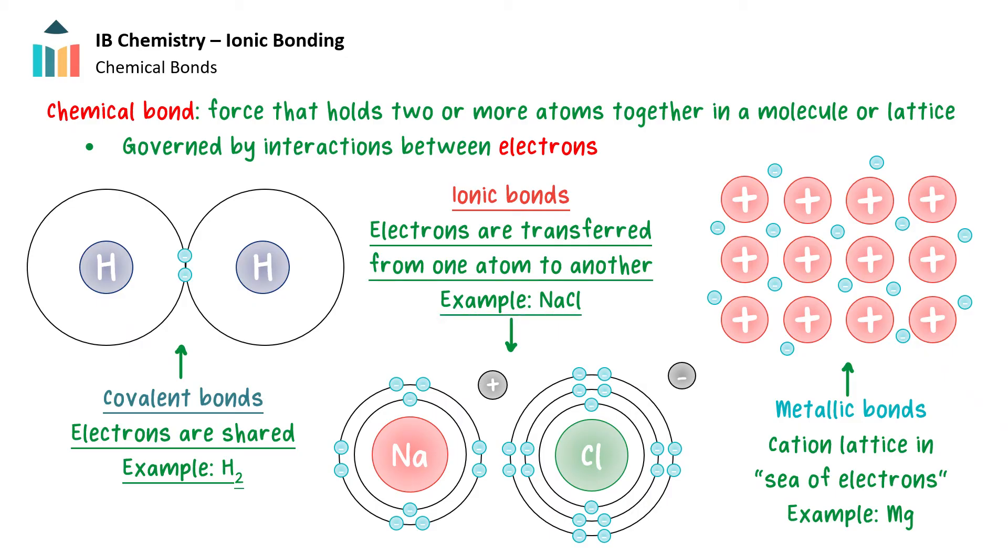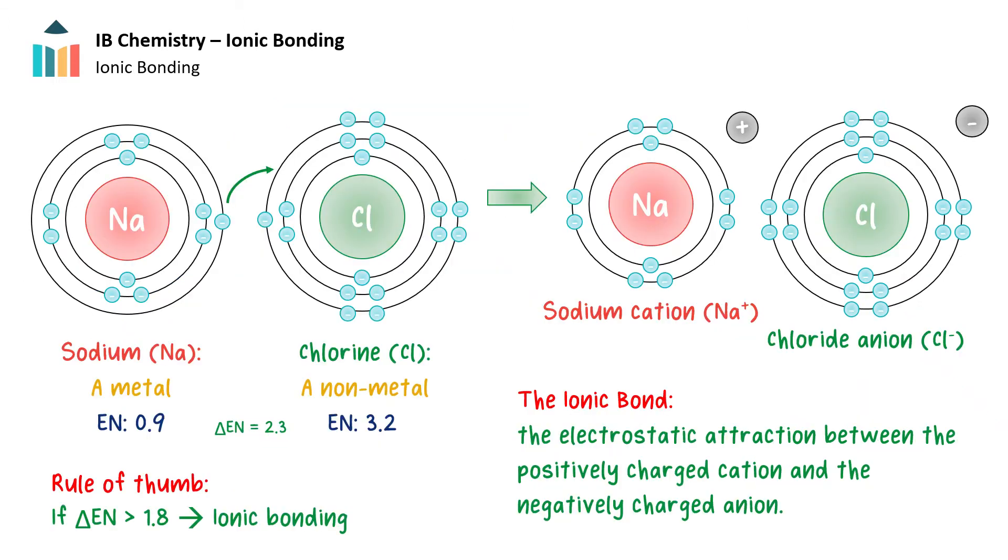In metallic bonds, electrons are delocalized and shared between the cations of the metal. The properties of a substance formed by atoms bonded together can differ greatly from those of the individual atoms. Let's begin with a closer look at ionic bonds.